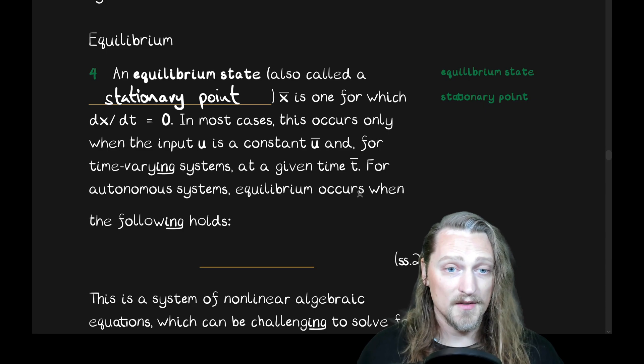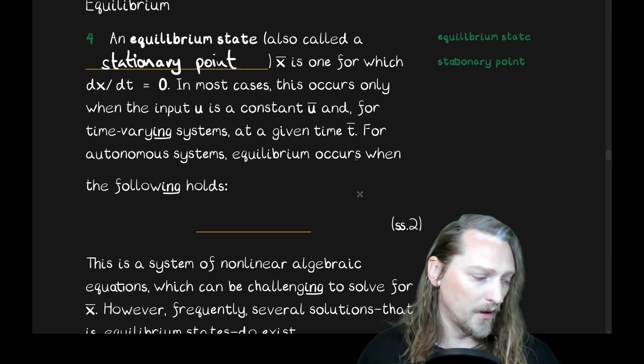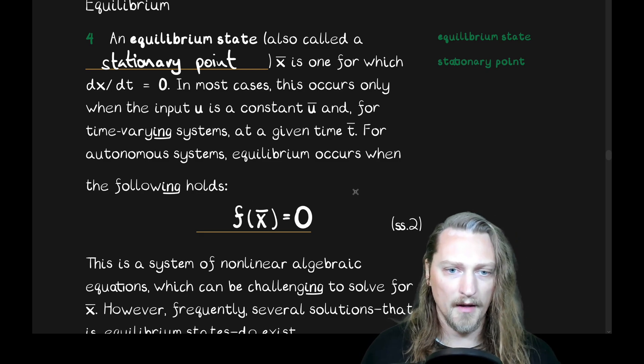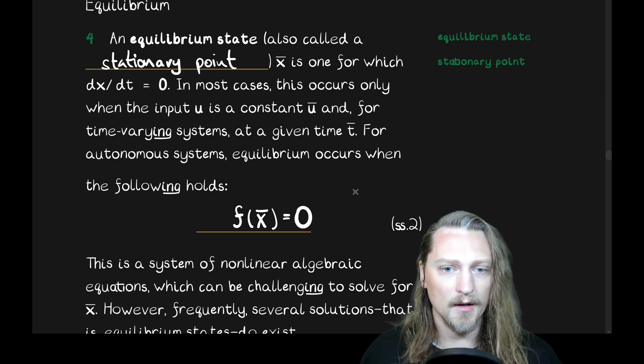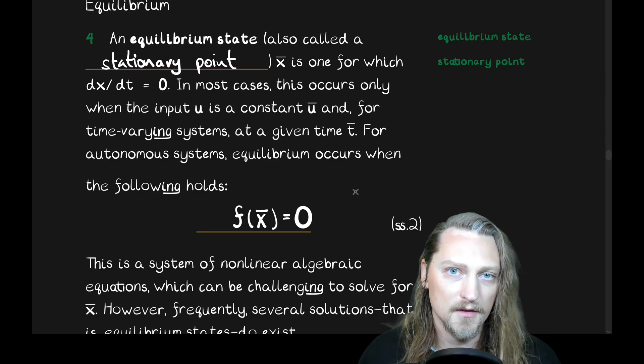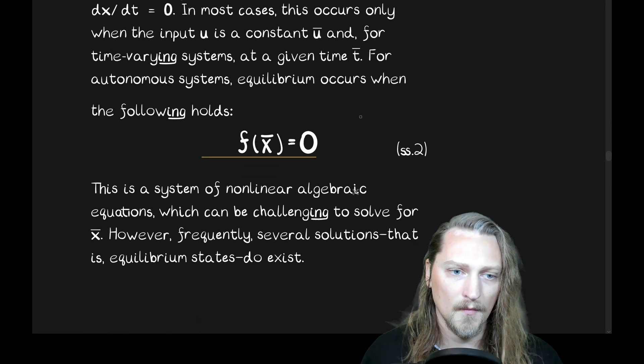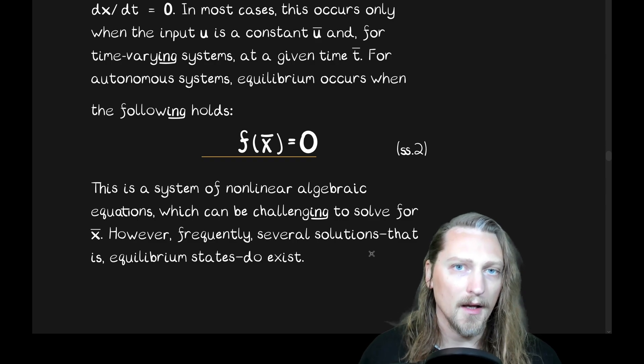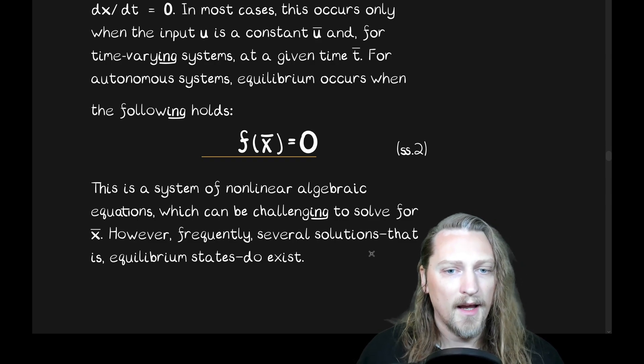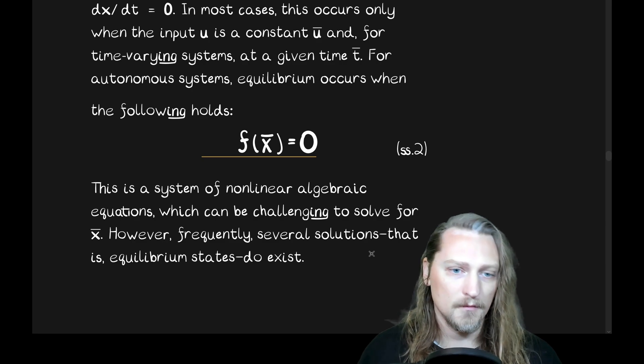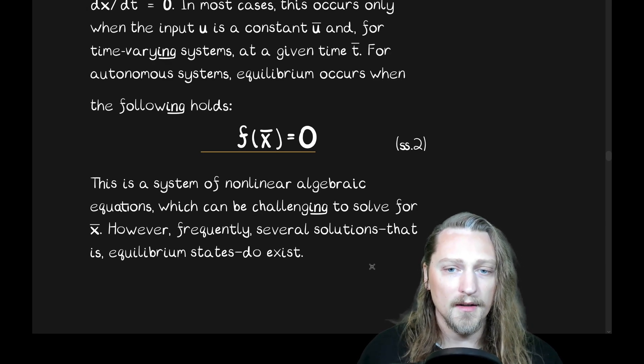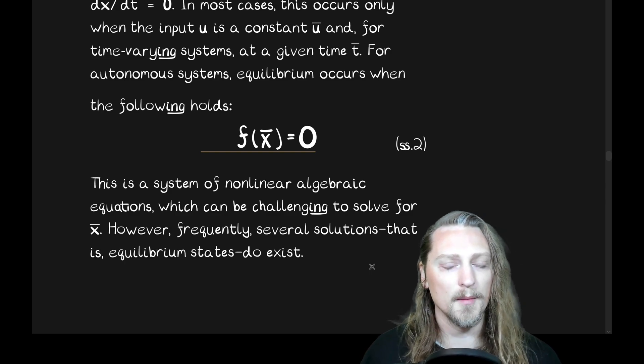For autonomous systems, equilibrium occurs when the following holds. That is, f of x bar equals the zero vector. Call that equation two. This is a system of non-linear algebraic equations, which can be challenging to solve for x bar, which would be our stationary point. However, frequently, several solutions, that is, equilibrium states, do exist.